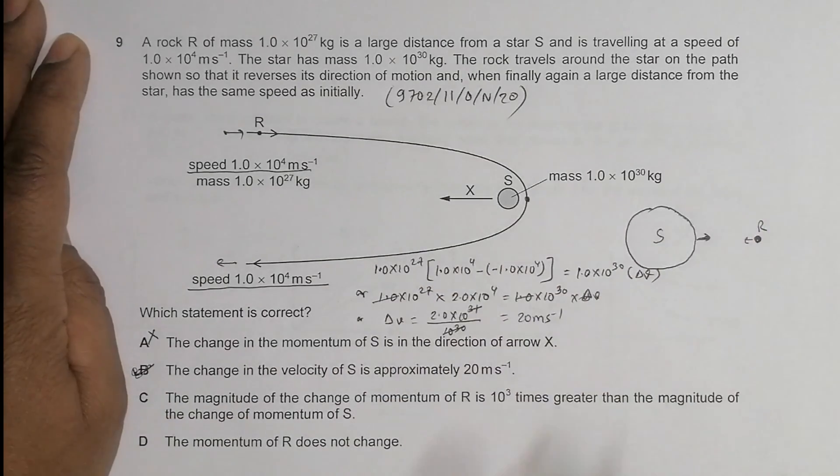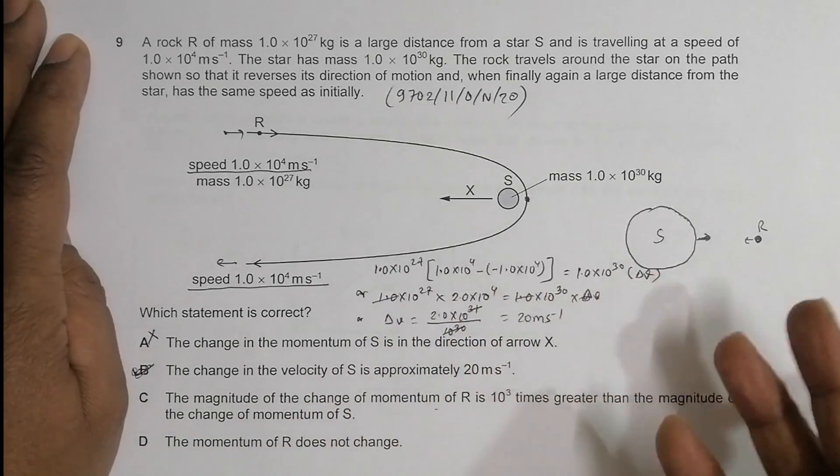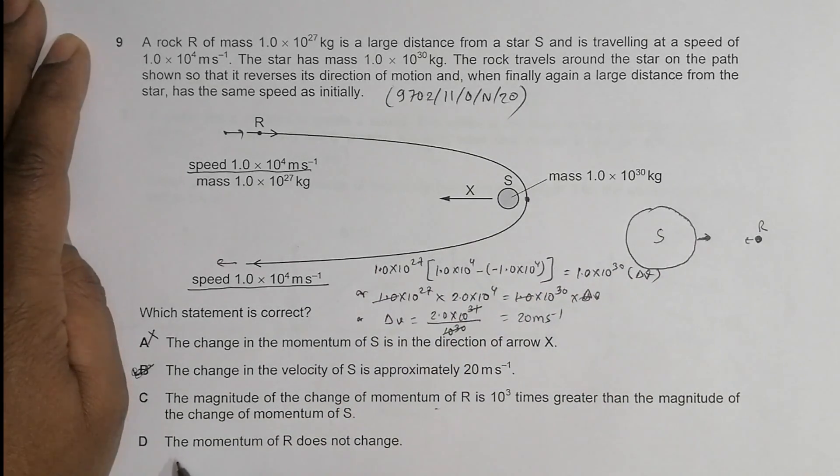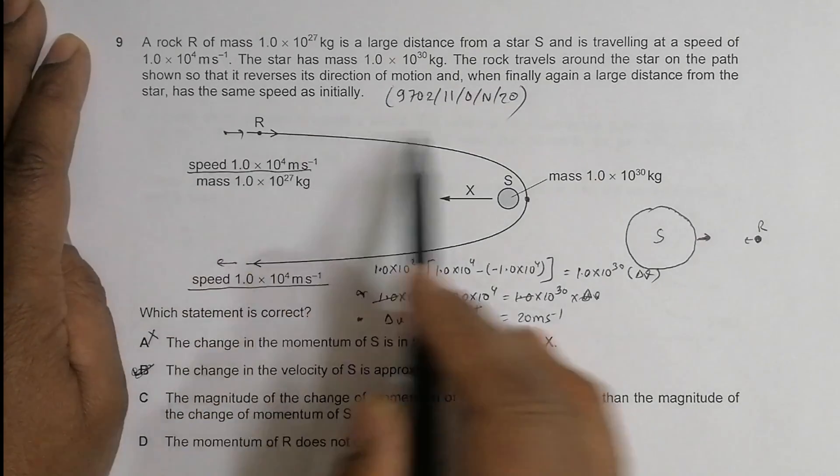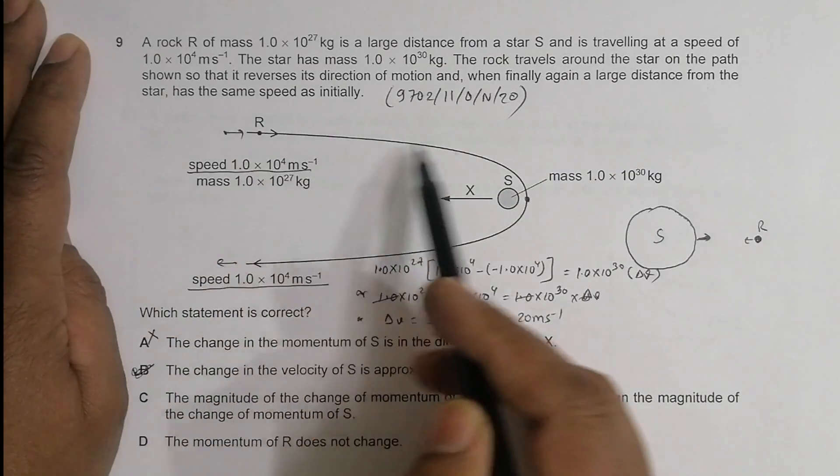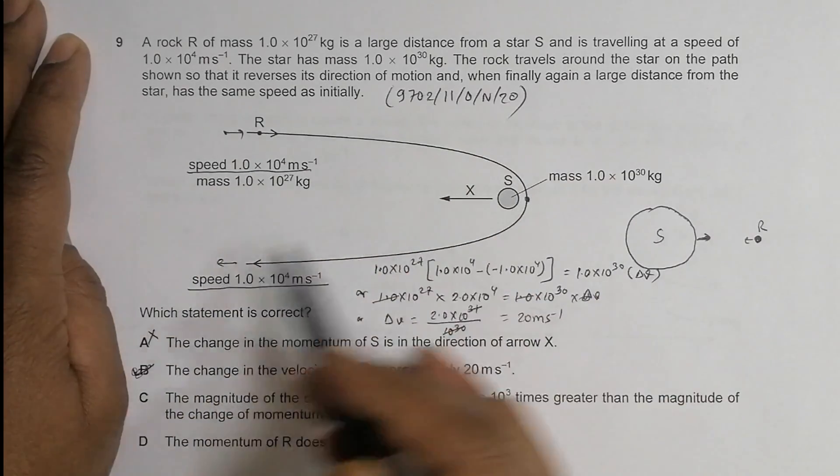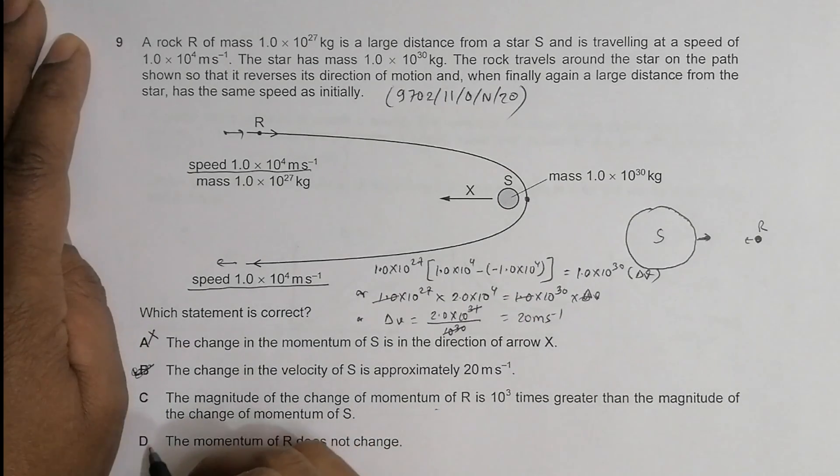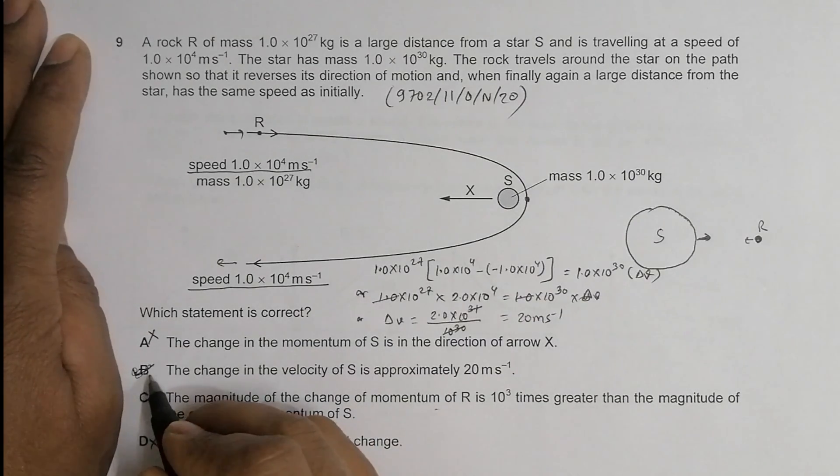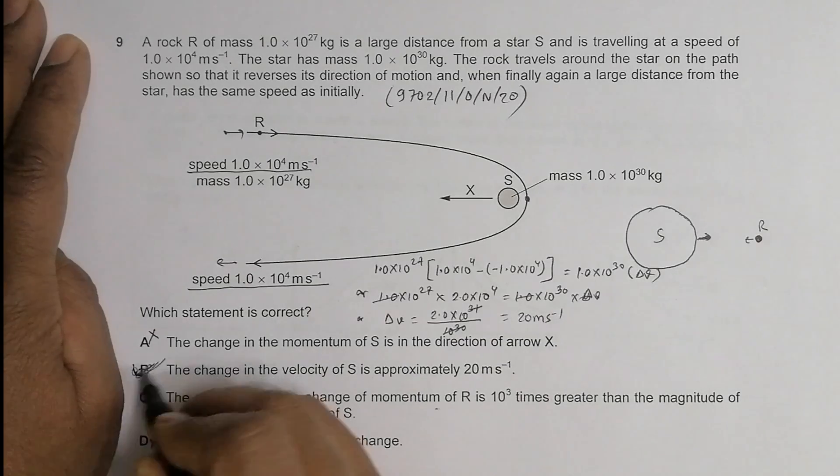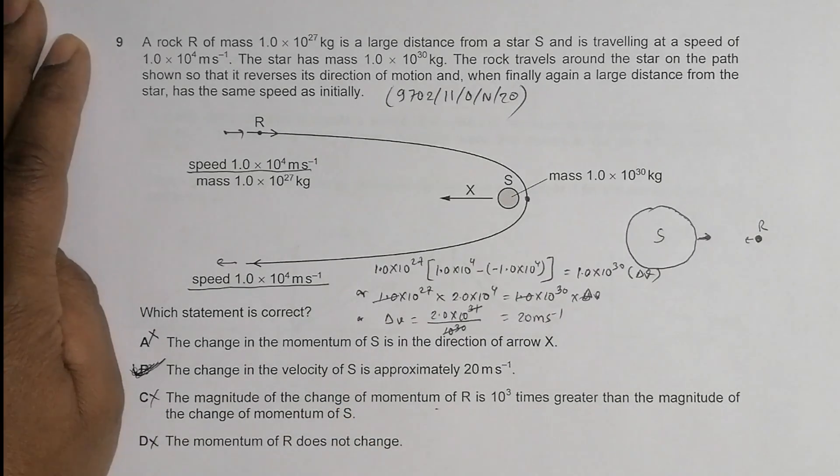Let's check all options. Option C says the magnitude of the change in momentum of R is 10³ times greater than that of S - untrue, because the change in magnitude for both bodies should be numerically equal. Option D says the momentum of R doesn't change - again untrue, because the velocity has changed very much. The speed is the same, but the velocity has reversed completely. The only correct choice is option B.